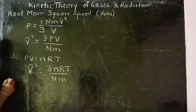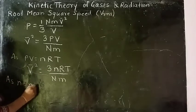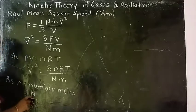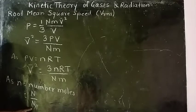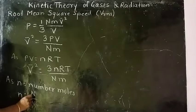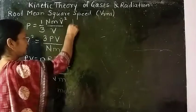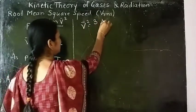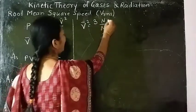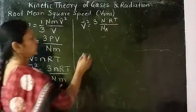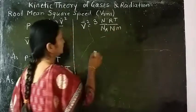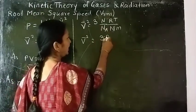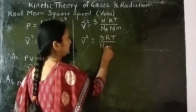Again I will substitute for small n. Here n equals the number of moles, which equals capital N divided by N_A — number of molecules divided by number of molecules per mole, which is nothing but Avogadro's number. Therefore, instead of n, I will substitute capital N divided by N_A. Now v-bar² = 3 × (N/N_A) × RT divided by N × m. The N's cancel, giving v-bar² = 3RT / (N_A × m).